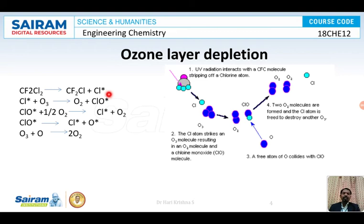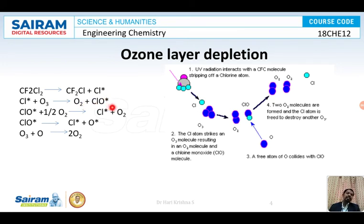When will this cycle end? There is a termination for this — when two chlorine free radicals meet each other, they form chlorine gas. Until then, this reaction continues. The CLO, whatever is formed, dissociates to form chlorine free radical and oxygen free radical. This chlorine free radical once again attacks oxygen and we get O2 and CLO free radical. Just one molecule of chlorofluorocarbons can deplete an enormous number of ozone molecules present in the stratosphere.